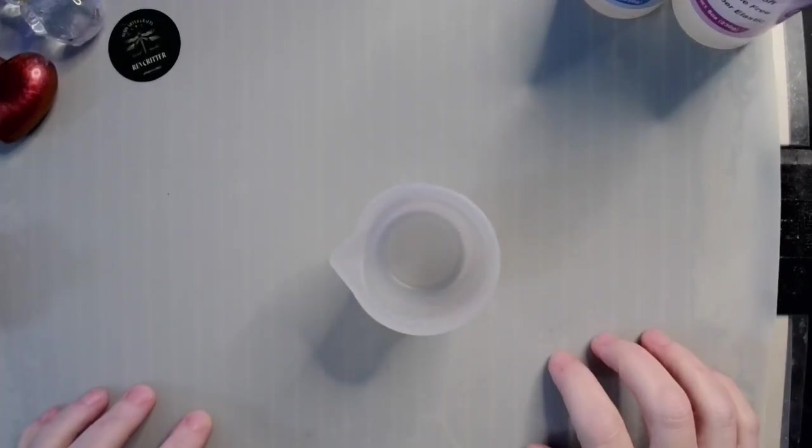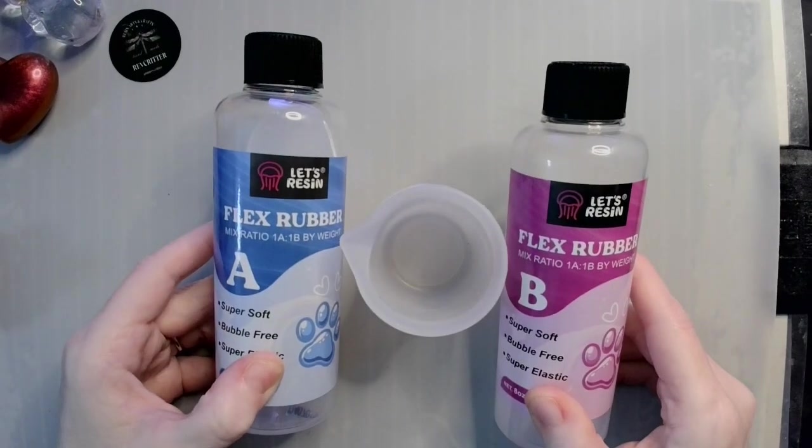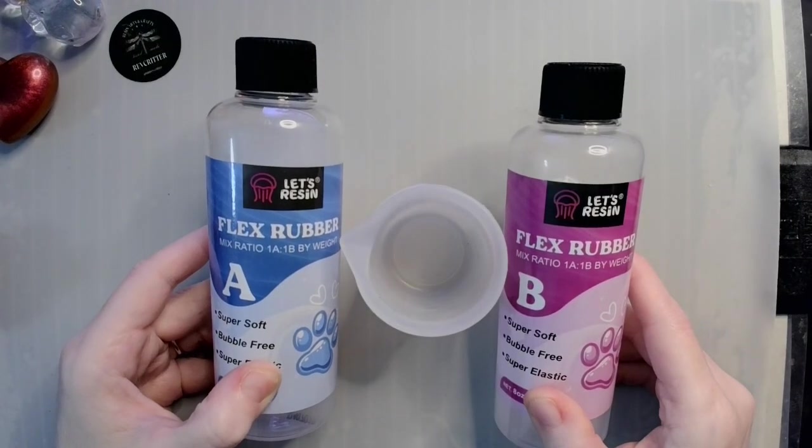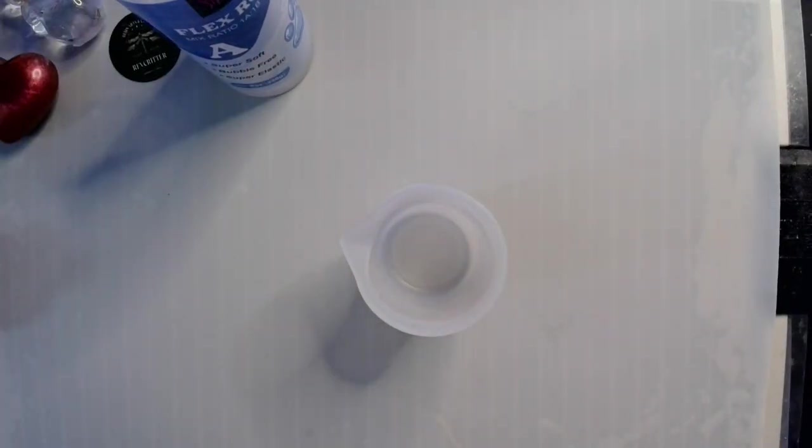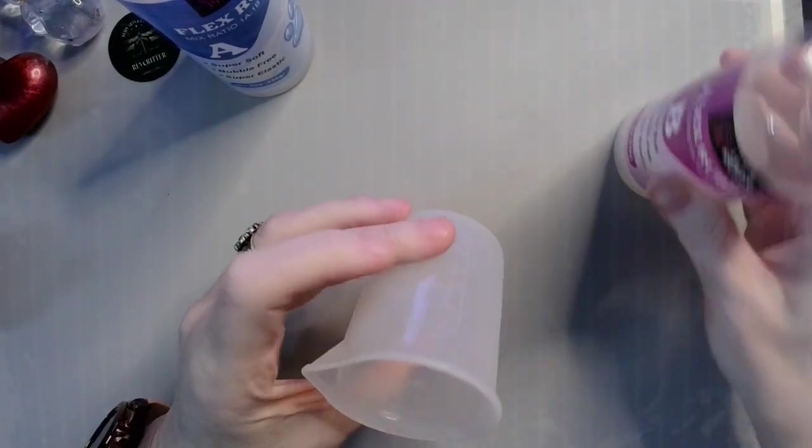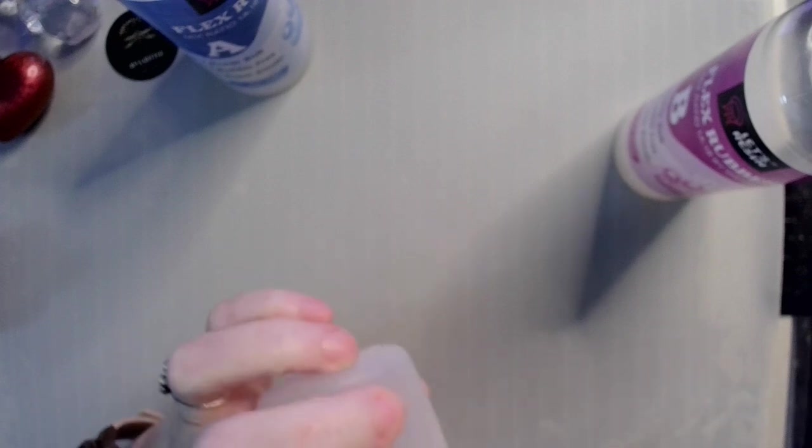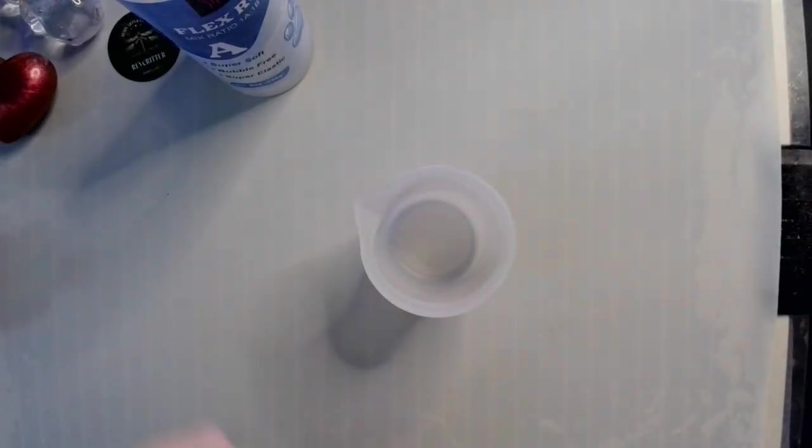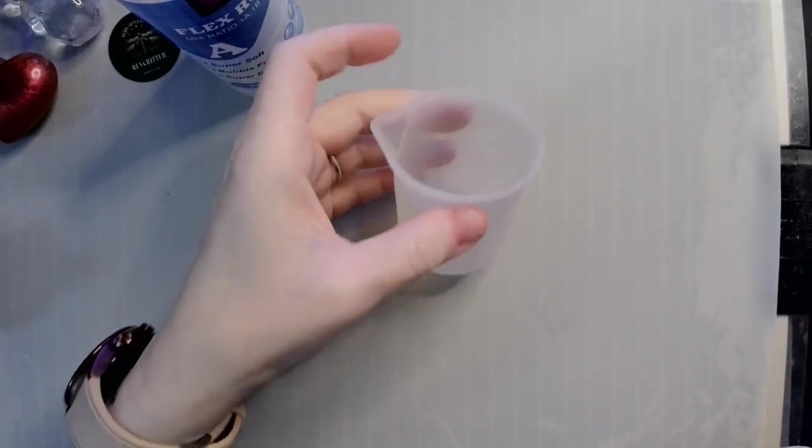And what I'm going to use is my Let's Resin Flex Rubber. Now this, we all know, or if you don't know, is to make squishies. Really squishy things that are awesome and you can play with them and they're very soft. But I'm gonna make something functional out of this.